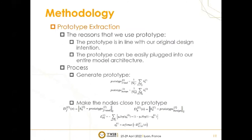Based on H2 connection aggregation, we can obtain the representation of nodes. However, some fraudsters are trapped in too many benign entity neighborhoods. These fraudsters can only obtain the information of inter-class dissimilarity from benign neighbors, but lack information of inter-class similarity from other fraudsters. To solve the problem, we introduce category information with a prototype. We adopt a prototype for two reasons. First, the prototype is in line with our original design intention, which uses labeled data to find the approximate category center of each class, and then makes samples within the class more similar by shortening the distance between each sample and the prototype. Second, the prototype can be easily plugged into our entire model architecture.